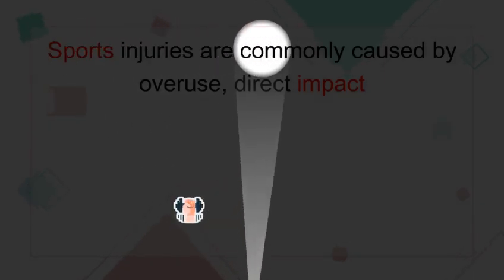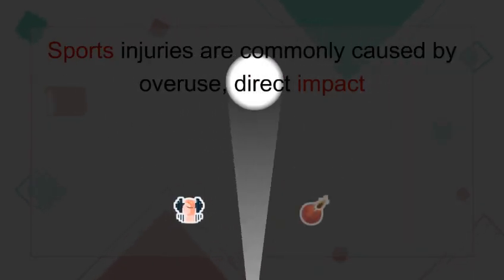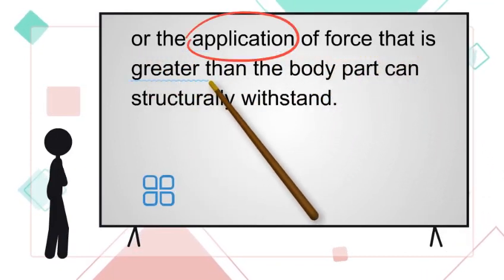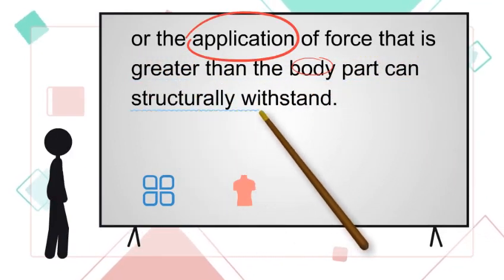Sports injuries are commonly caused by overuse, direct impact, or the application of force that is greater than the body part can structurally withstand.